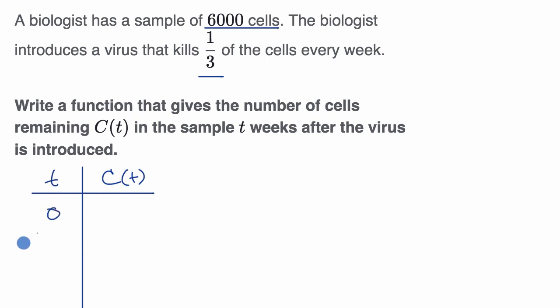So time T equals zero. When zero weeks have gone by, we have 6,000 cells. That's pretty clear. Now after one week, how many cells do we have? What's C of one?